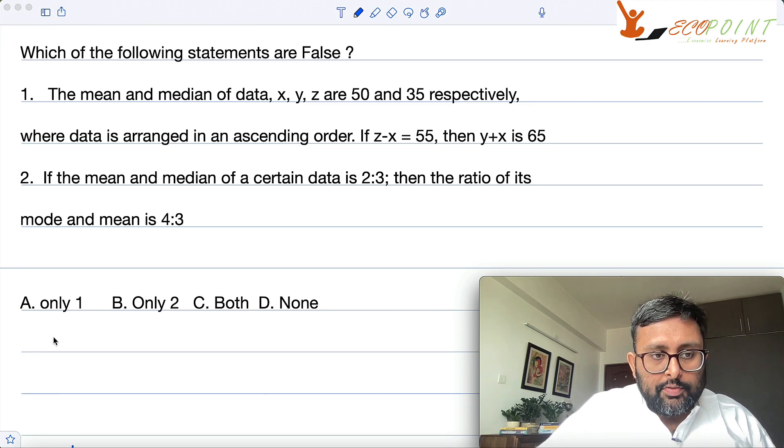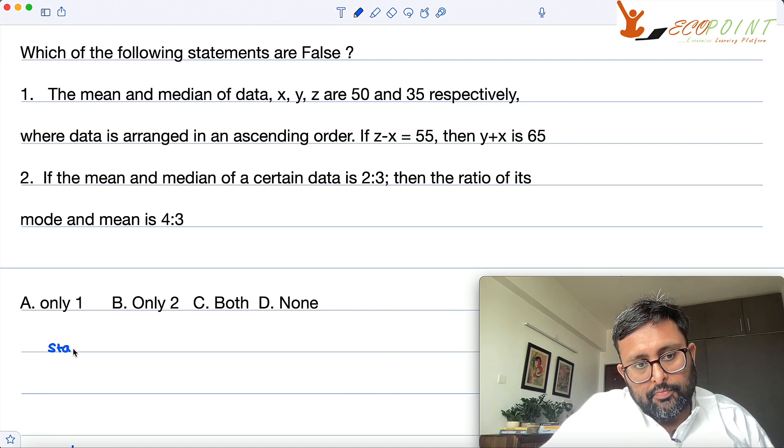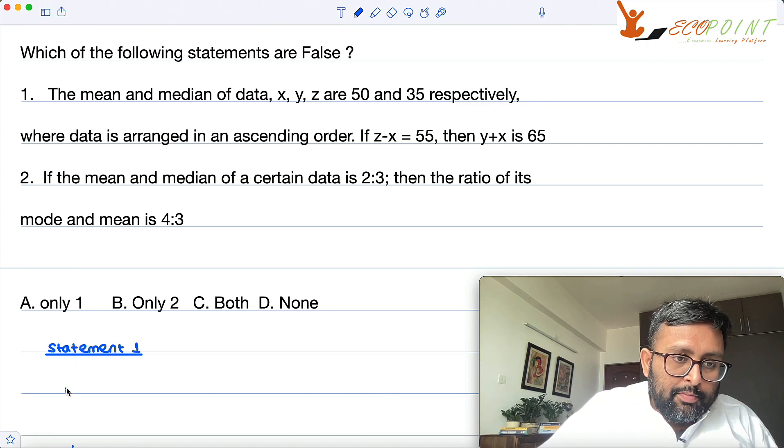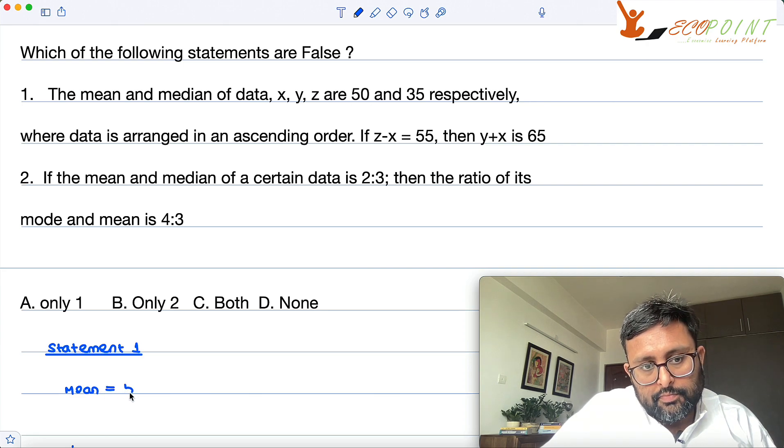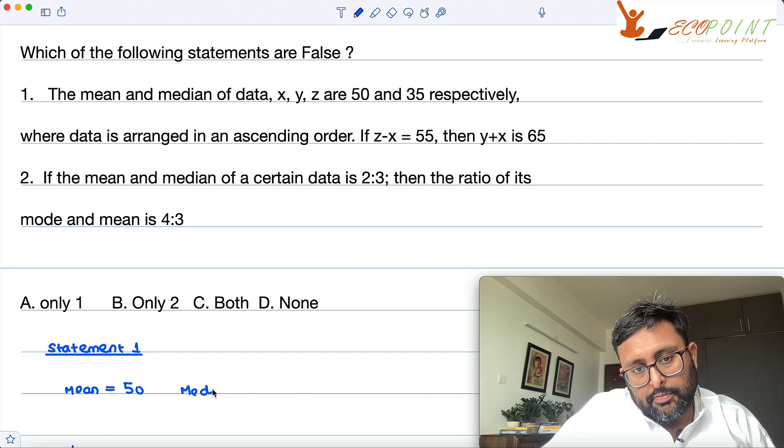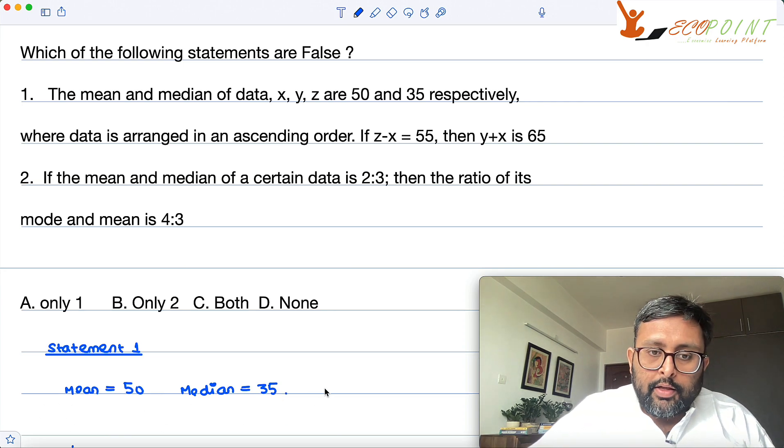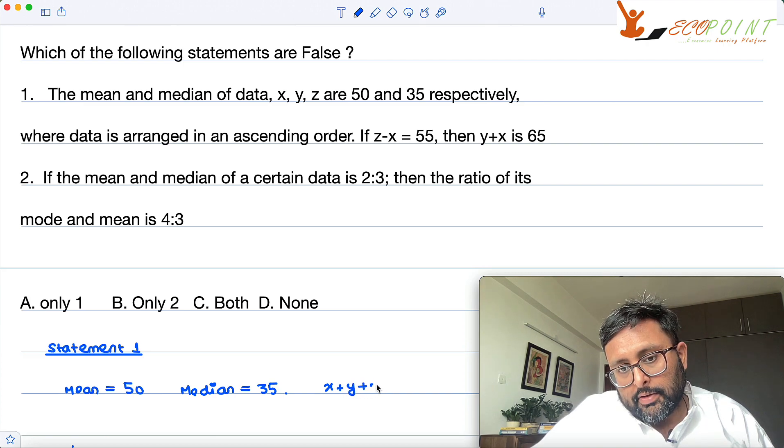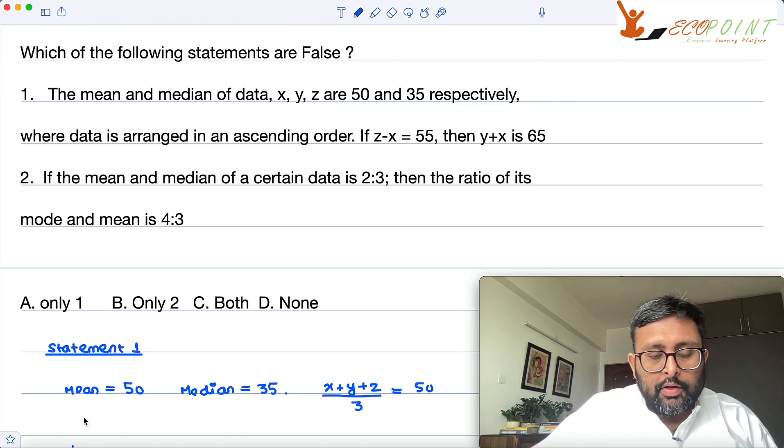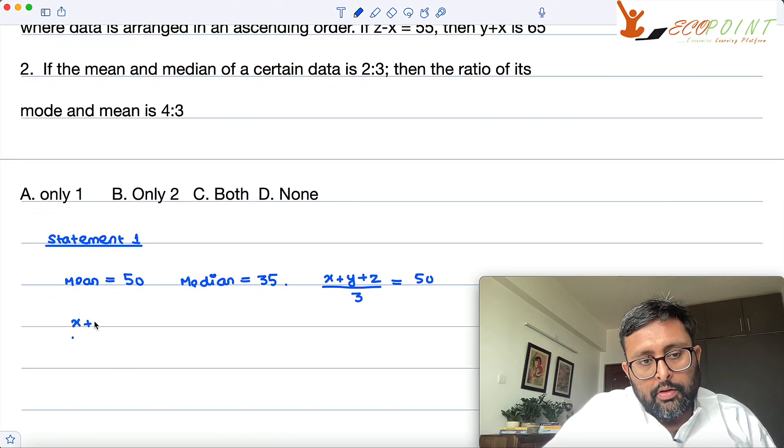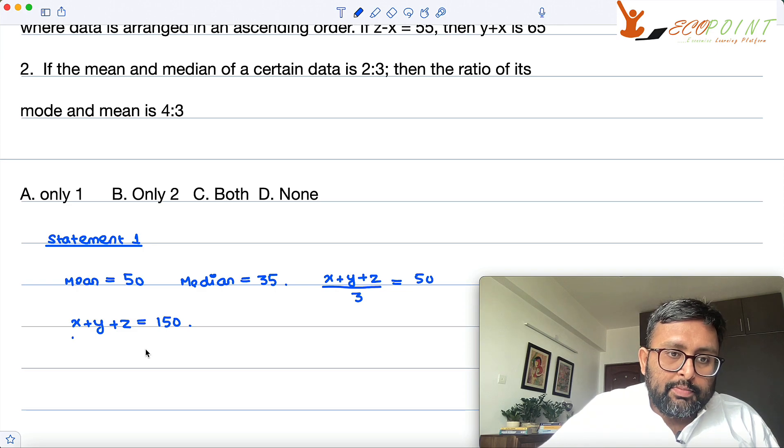Let me write for statement one first. You are given with mean as 50, median as 35. So if mean is 50, so x plus y plus z upon 3, that is 50. So that would mean x plus y plus z is 150, right? x plus y plus z is 150.